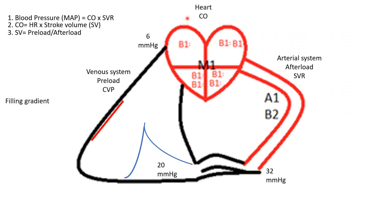Here we have our basic cardiovascular system. We have the heart, we have our cardiac afterload or arterial system, and then our venous system. And we have our equations which tell us how the body homeostatically regulates our vital functions.